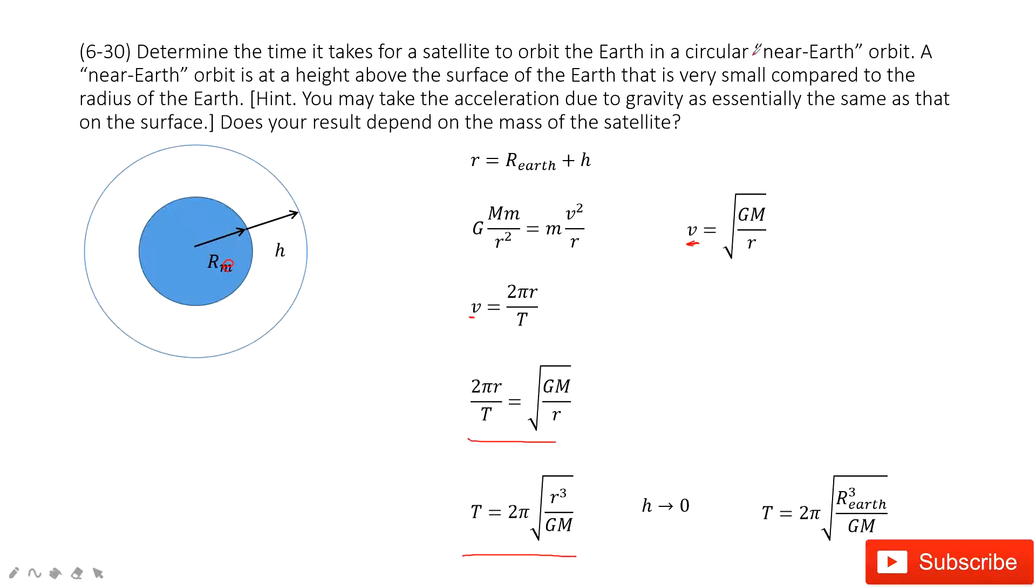Because this asks you to do the circular motion near Earth, this h is very small, super small, tends to zero. So we can consider h is very small, tends to zero. So it moves just along the surface.